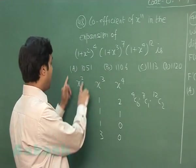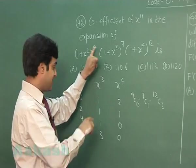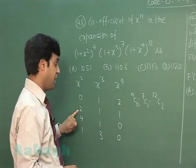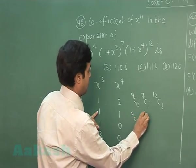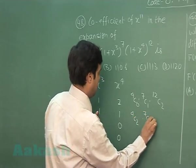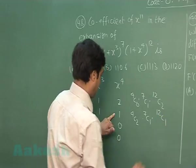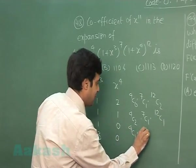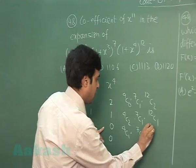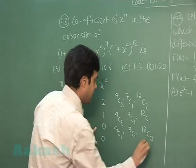For this one, 1 plus x² whole to the power 4 is there. I am looking for the power of x² as 2 means 4C2, 7C1, 12C1. 4C1, 7C1, 12C0.